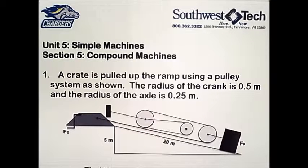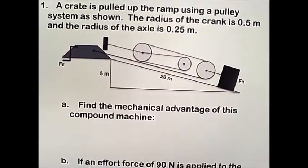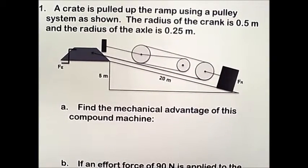A crate is pulled up the ramp using a pulley system as shown. The radius of the crank is 0.5 meters and the radius of the axle is 0.25 meters. We need to find the mechanical advantage of this compound machine.